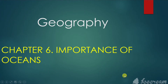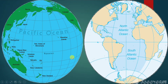A very good morning students. Today we will see the geography subject, chapter number 6: importance of oceans. In the previous chapter we have seen about the lithosphere and hydrosphere of the earth. Now here we are going to see the proportion of the land and water on earth.